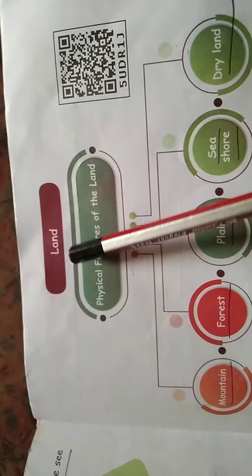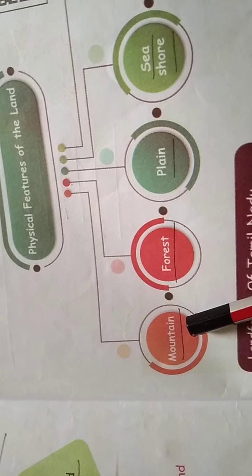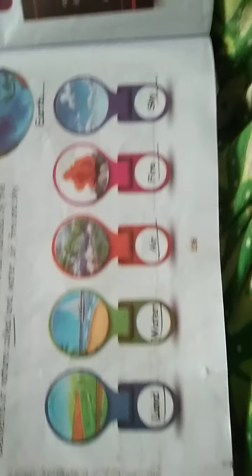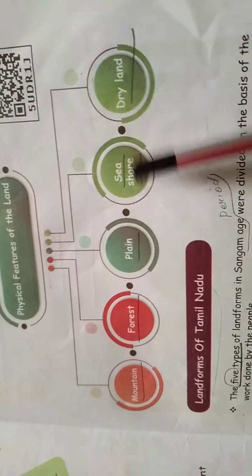So, first we will look at land — the physical features of the land. Land is of different types. Some regions are filled with mountains, some land has forest, some land is plain, some land is seashore, and some is dry land. So there are five landforms. We are going to look in detail about the land because this lesson is about landforms. Remember the five landforms: mountain, forest, plain land, seashore, and dry land.